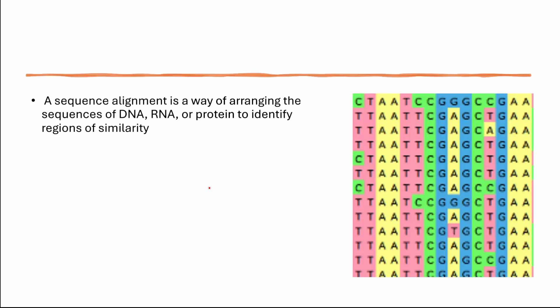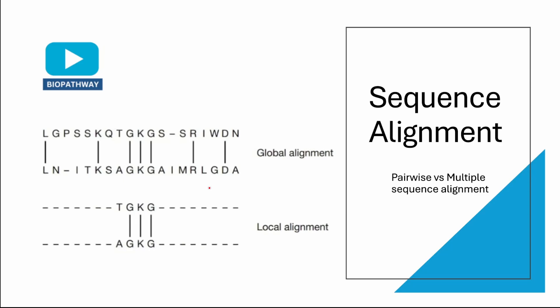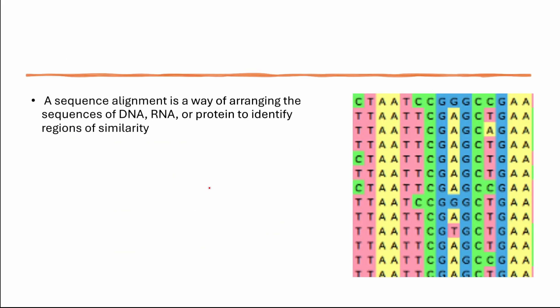Sequence comparison is a crucial aspect of bioinformatic analysis. Today's video is about sequence alignment. We will discuss the difference between global and local alignment, and also the difference between pairwise versus multiple sequence alignment. Sequence comparison involves comparing newly determined biological sequences with previously known sequences stored in databases. Sequence alignment is considered the most essential step in comparing biological sequences.